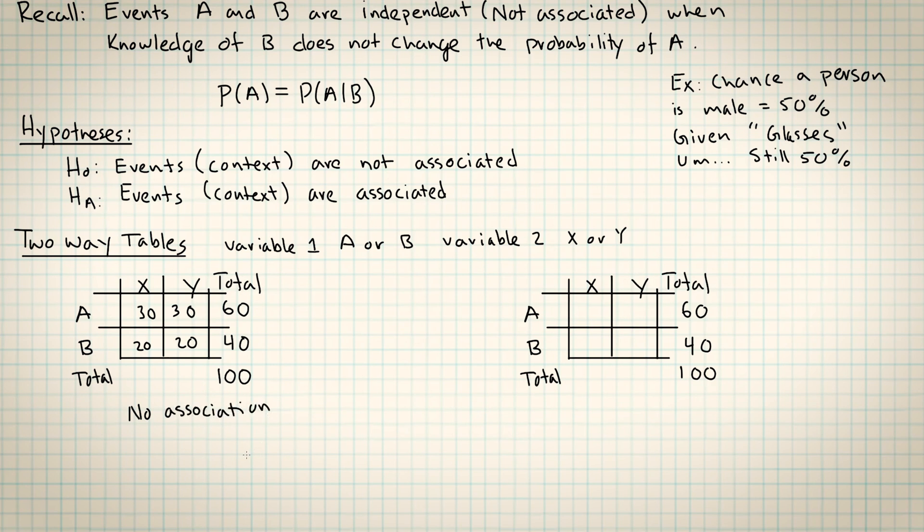Because both of the variables are just evenly split. In category A, it's a 50-50 split. And in category B, it's also a 50-50 split. So to me, it doesn't look like there's any association between the variables A and B and the variables X and Y. Because for category A, it's 50-50 split between X and Y. And for category B, it's a 50-50 split between X and Y.